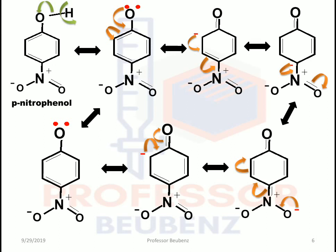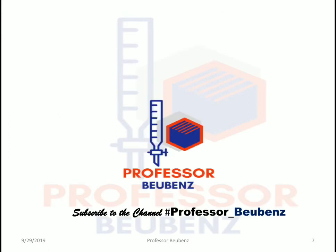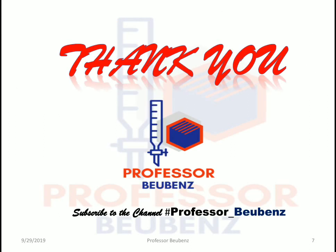In nitrophenol, more resonating structures are formed, therefore it is more acidic. This cycle continues and rapid resonance is formed, which is why nitrophenols are more acidic than plain phenol. This is all about the acidity of phenols and the effect of substituents on acidity of phenols. Thank you for watching — stay connected and subscribe to the channel, Professor Bubenz.